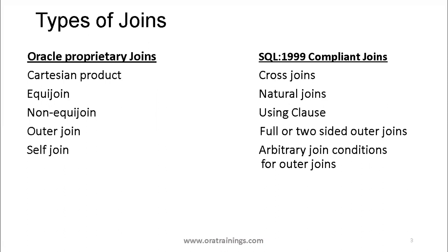Each join will be used based on the requirement, and the resultant data will differ based on which join you use. Each join has a different functionality — we'll use a particular join based on a specific requirement. We'll get into each join and understand how and why a particular join is required in a given scenario.